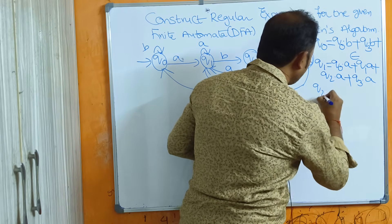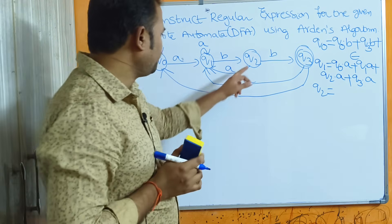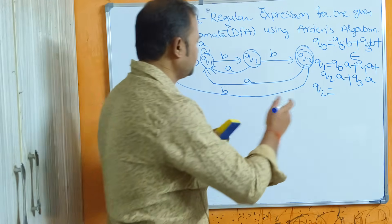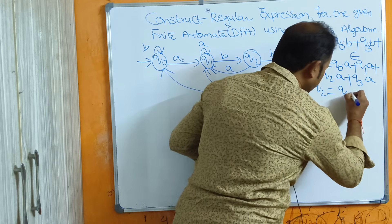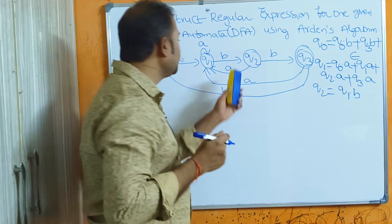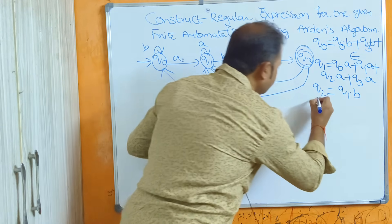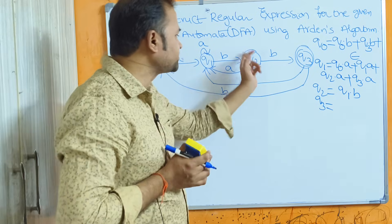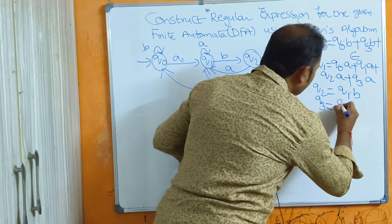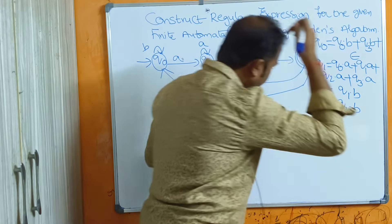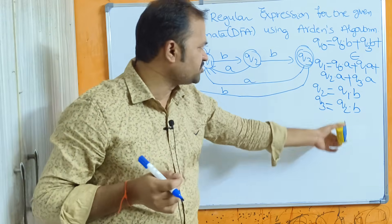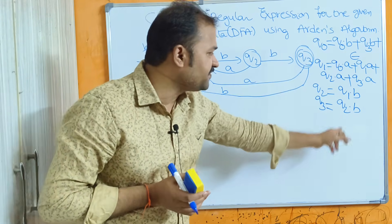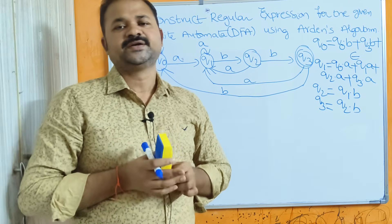For q2, there is only one incoming edge — with input b from q1 — so the state equation is q2 = q1·b. For q3, there is also only one incoming edge from q2, so q3 = q2·b. This completes the first step: constructing state equations for all states based on incoming edges.